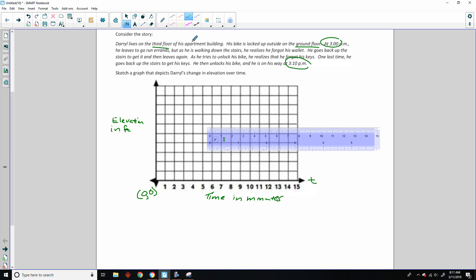Well, third floor would be 30 feet if every story is 10 feet. So I'm going to count these by 3s up to 30. Then that is where he starts. So he is at his apartment level, 30 feet above the ground at time zero.